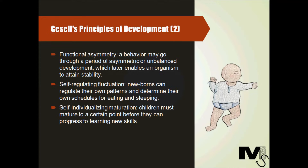The next principle is the principle of self-regulating fluctuation. He proposed that newborns are able to regulate their own patterns and determine their own schedules for eating and sleeping. As they develop, the number of sleeps needed per day and the number of meals needed per day reduces. This type of development happens in a spiral pattern alternating between equilibrium and disequilibrium while they are learning new things, hence called fluctuations.